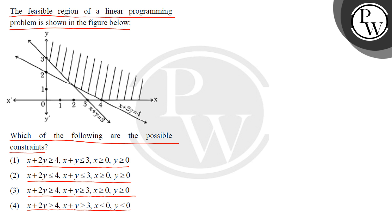The first quadrant is shaded. If the first quadrant is shaded, then x is greater than 0 and y is greater than 0. So we have to cut option 4 (x ≤ 0, y ≤ 0) and also cut option 2 based on this condition.